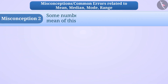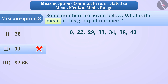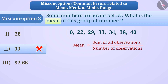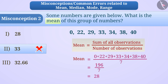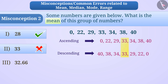Misconception 2: because of confusion between mean and median, some children think the mean is the middle number of a series, which is 33 here. But this is incorrect. Mean equals sum of all observations divided by number of observations, so the mean here is 28 — option 1 is the correct answer. Keep in mind that when numbers are arranged in ascending or descending order, the number in the middle is called the median. Here, the median is 33.